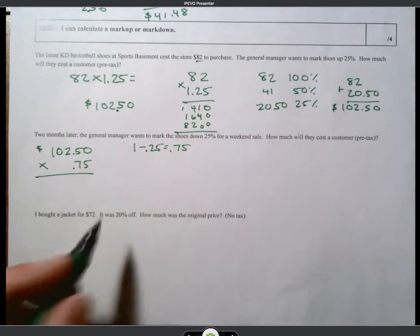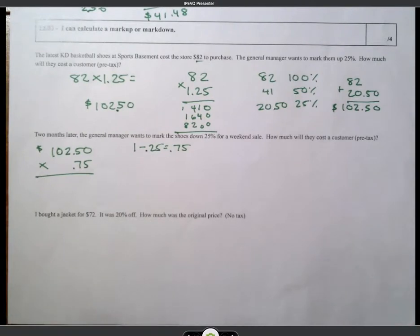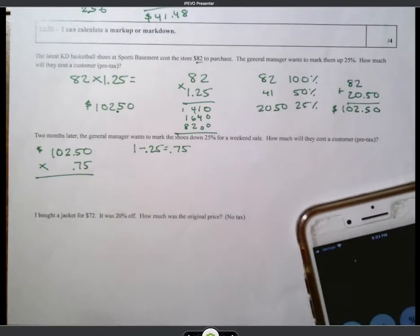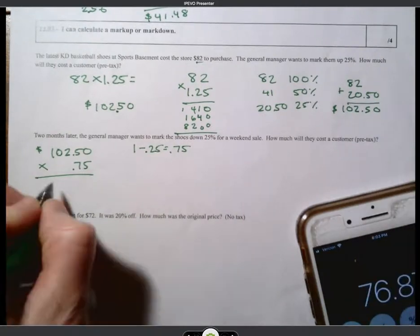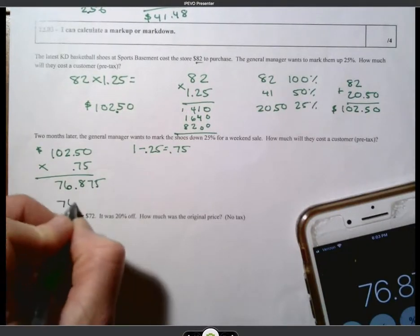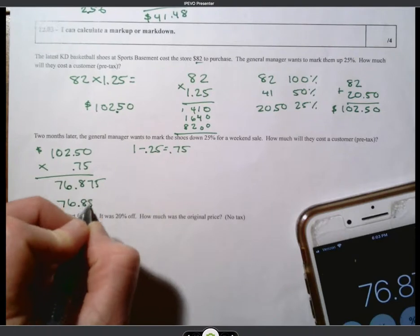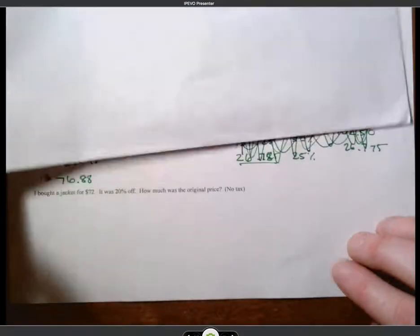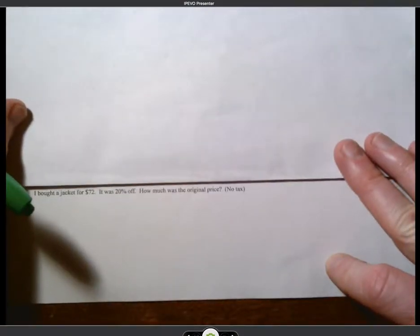So we'll go ahead, and I'm not going to bore you with multiplying this out by hand. 102.5 times 0.75. $76.875. So we'll take this $76.88. Okay? All right. Let's go ahead and cover these up so we don't get distracted.